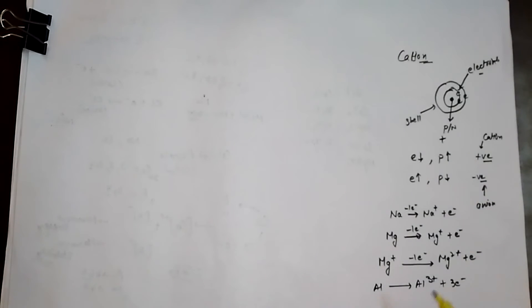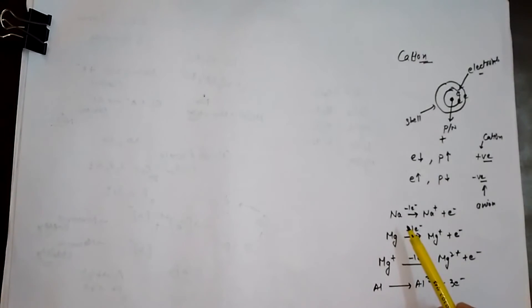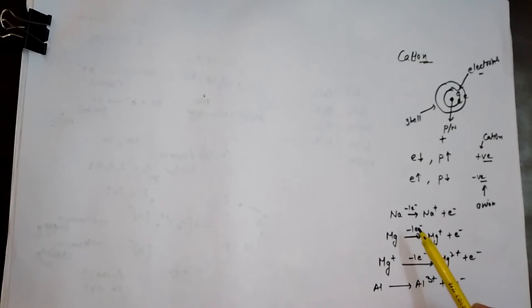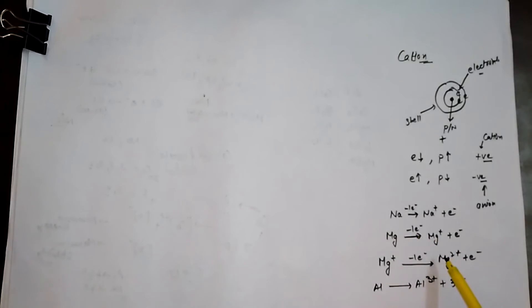For example, if sodium loses one electron, it will achieve a unit positive charge — so the cation has a single positive charge. If an atom loses two electrons, then the positive ion formed has two positive charges. Here I have given the example of magnesium atom.